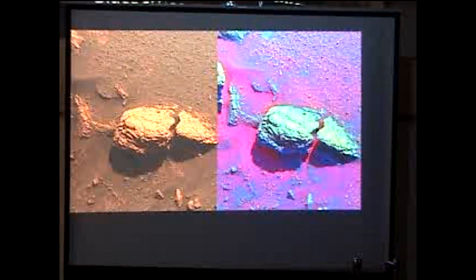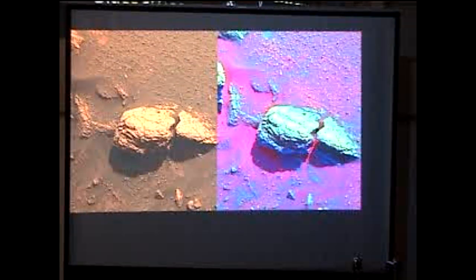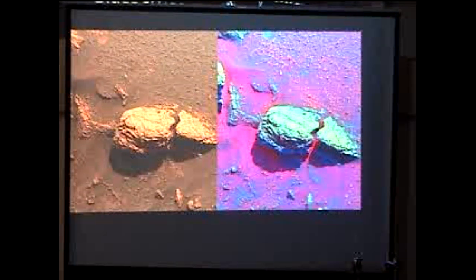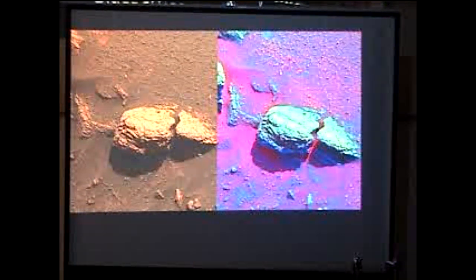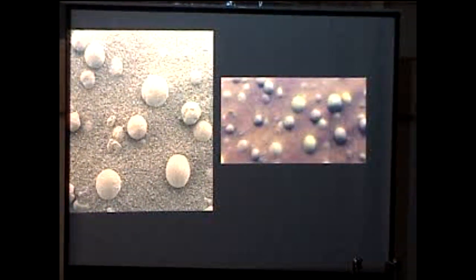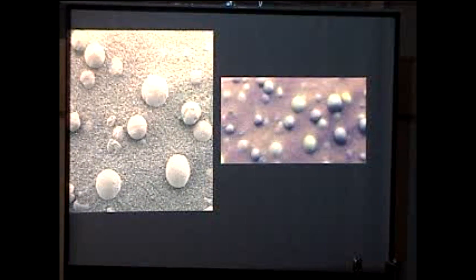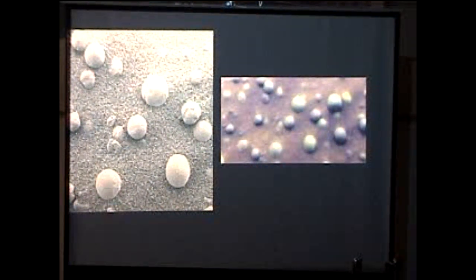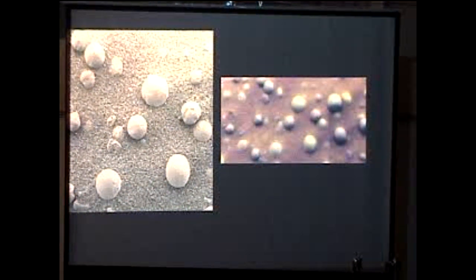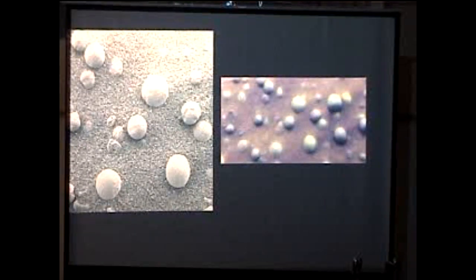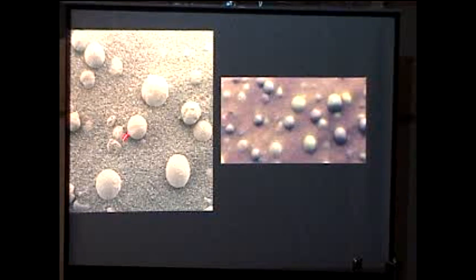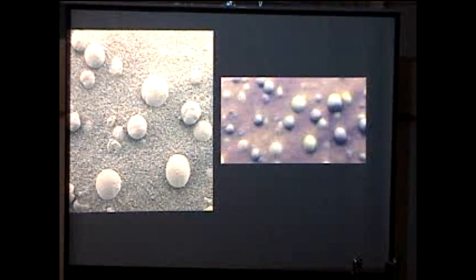It also found these things which mission scientists named blueberries. This is an outcropping they named Stone Mountain. This is a false color image to exaggerate and show you the different colors of these blueberry features. Here's a closer up image of these blueberry things. Of course, they're not actually blueberries, they're just rocks, but they called them that. This was another interesting thing because they also investigated the blueberries and found out they are made mostly of hematite. Hematite only forms in the presence of acidic water. So again, more evidence that there was ancient water on Mars.